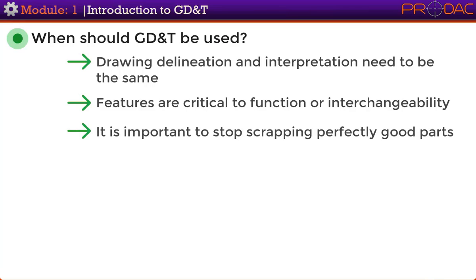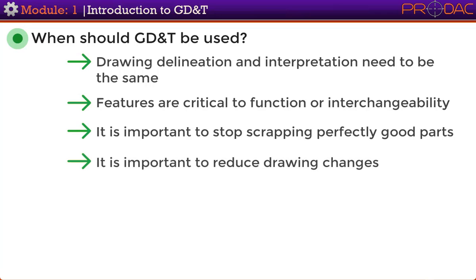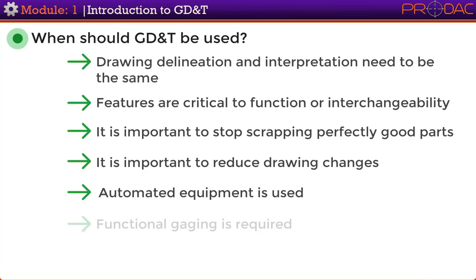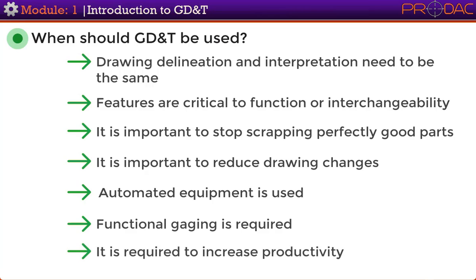The third case is when it is important to stop scrapping perfectly good parts. The fourth case is when it is important to reduce drawing changes. The fifth case is when automated equipment is used. The sixth case is when functional gauging is required. And lastly, we can use GD&T when it is required to increase productivity.